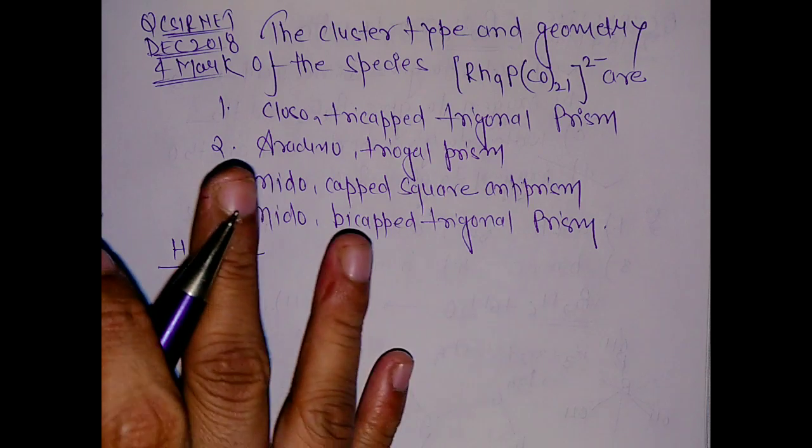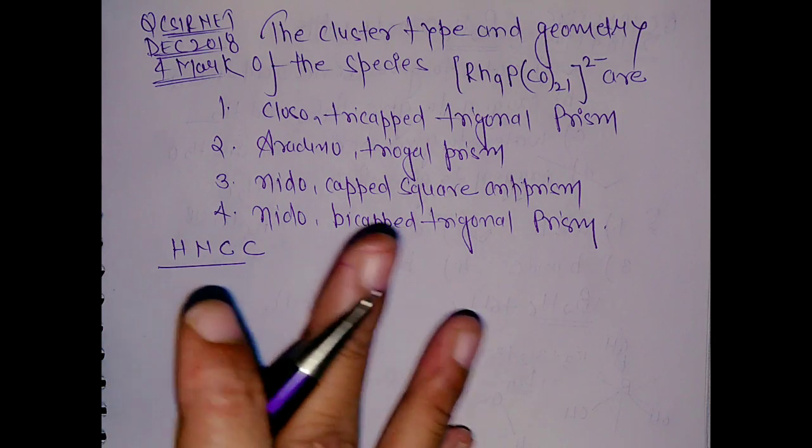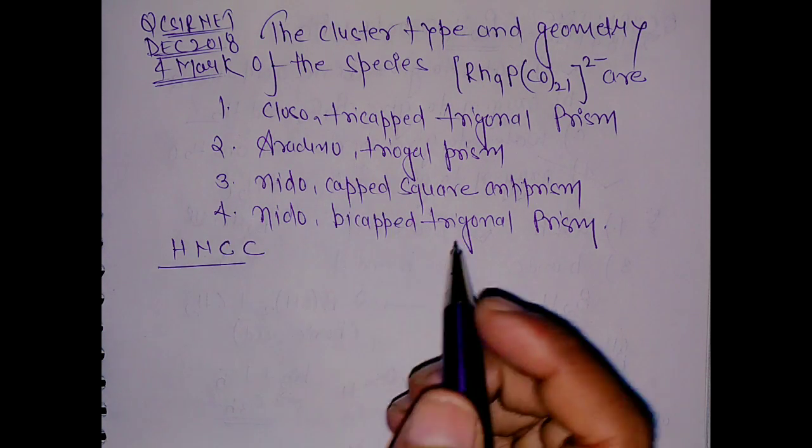From that you can calculate the structure whether it is closo, nido, arachno, hypo, or clado. But the main thing here is there is a specific geometry.